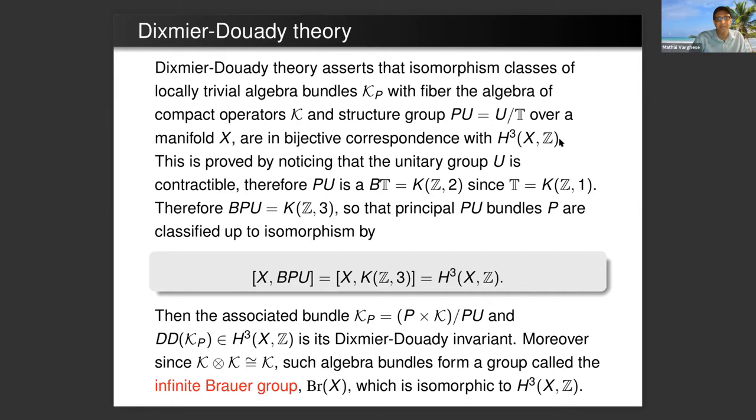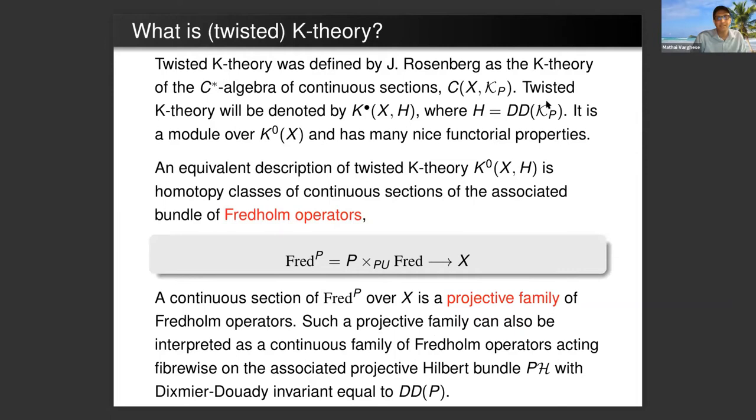Now I want to talk about projective index theory. So the Dixmier-Douady theory asserts that isomorphism classes of locally trivial bundles K_P with fiber the compact operators K and structure group the projective unitary group PU in infinite dimensions are in bijective correspondence with the third integral cohomology of X. Then the twisted K-theory of X was defined by Jonathan Rosenberg as the K-theory of the algebra of continuous sections of this bundle K_P.